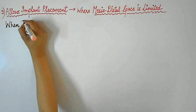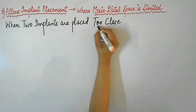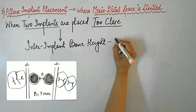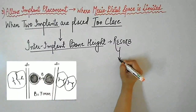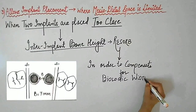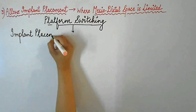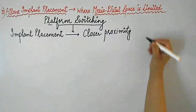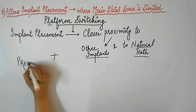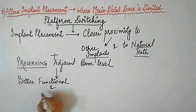Platform switching allows implant placement in cases where mesiodistal space is limited. When two implants are placed too close to one another — that is, where inter-implant distance is less than three millimeters — inter-implant bone height resorbs more, as greater resorption occurs to compensate for the biologic width. Platform switching makes it possible to place implants in closer proximity to other implants and to natural teeth while still preserving adjacent bone levels, allowing for better functional and aesthetic results where mesiodistal space is limited.